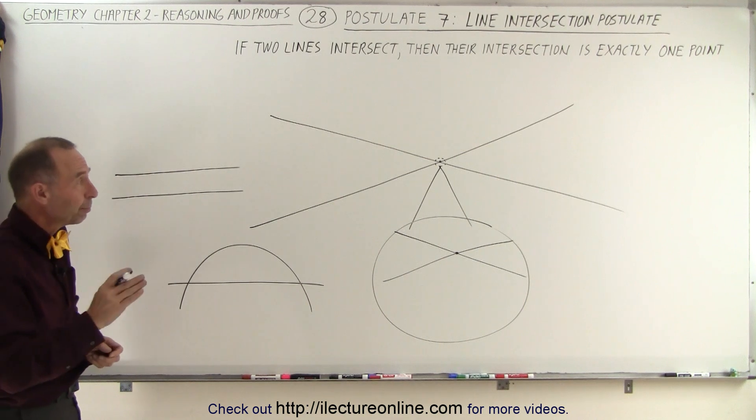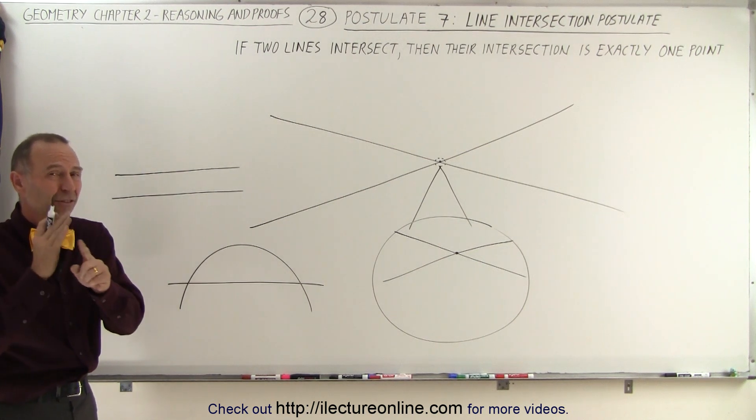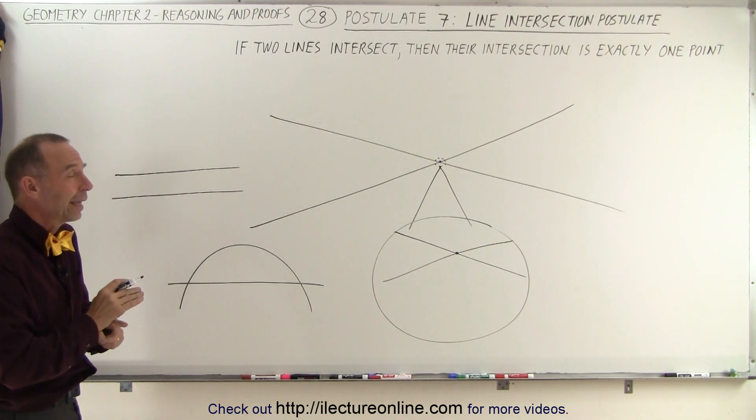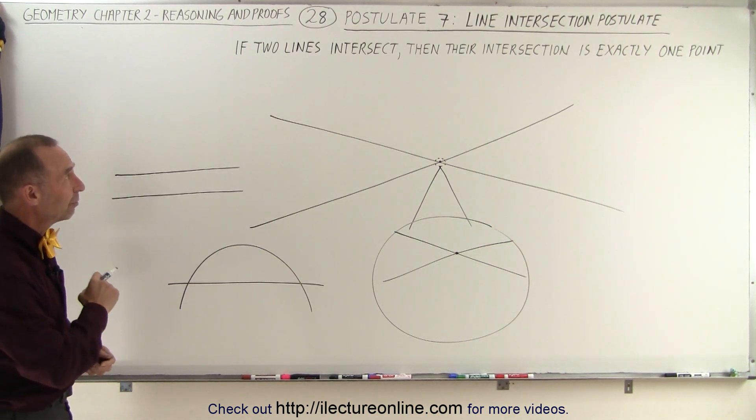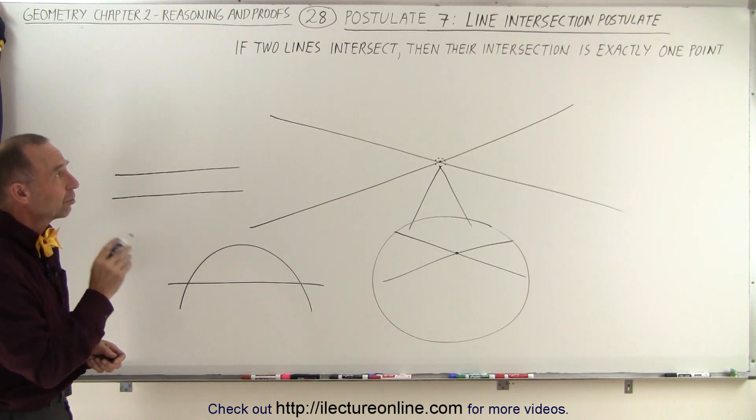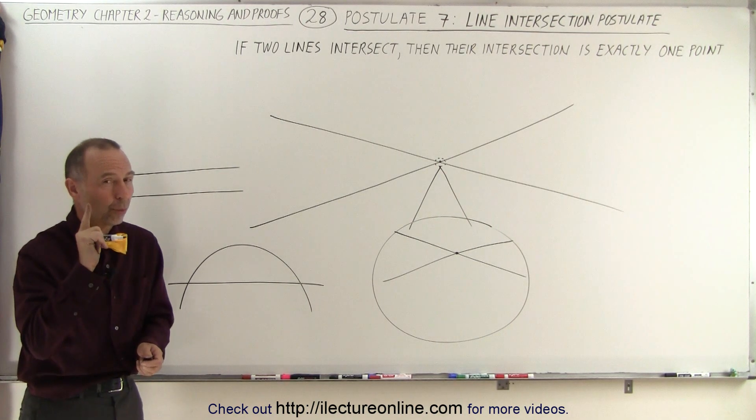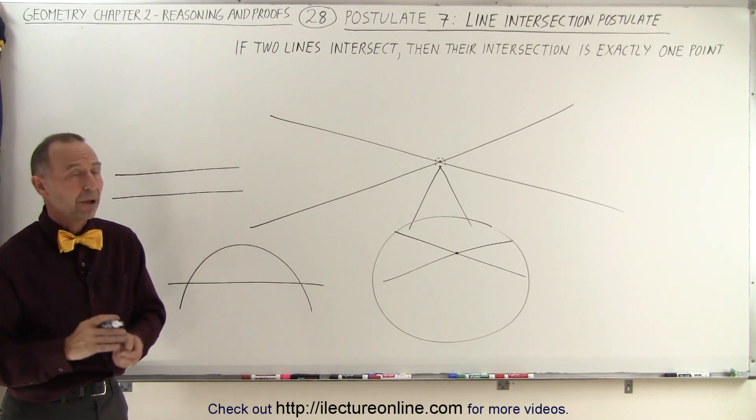But if the two lines are not parallel, they will cross at some point somewhere, and that is indeed just one point. That's what I mean by this postulate. If two lines do intersect, the intersection is exactly one point. That's postulate number seven.